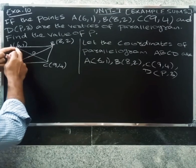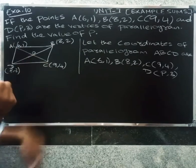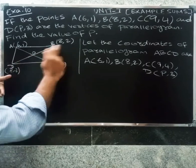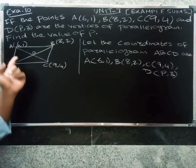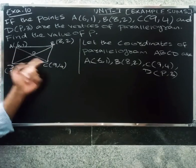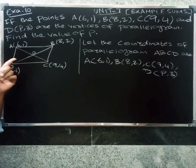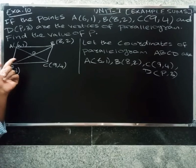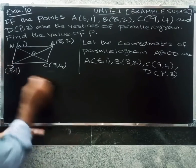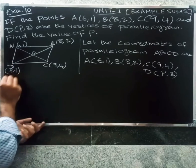The coordinates of the midpoint of diagonal AC equal the midpoint of diagonal BD. The diagonals of a parallelogram intersect each other at their midpoints.